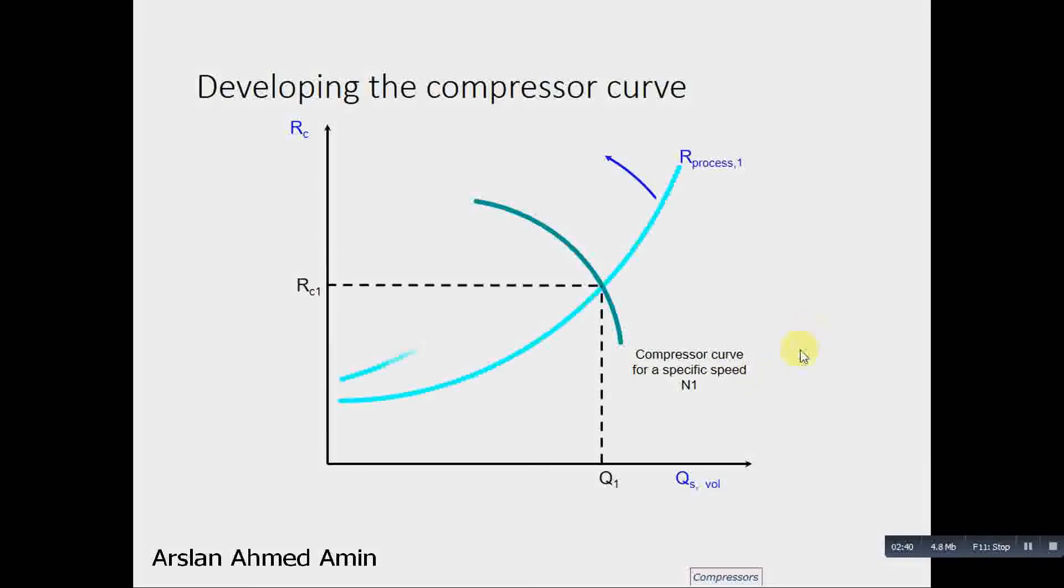And this is a normal resistance being felt by the compressor. So for that flow, we have this much resistance in the system. So for surge, for surging, the flow starts reducing.